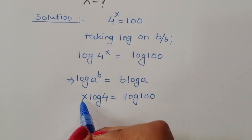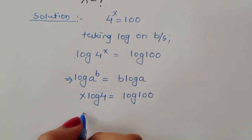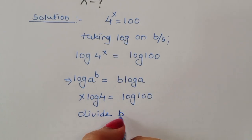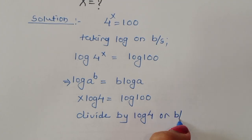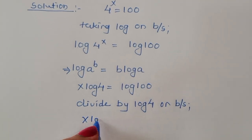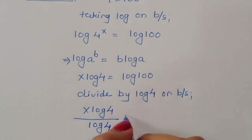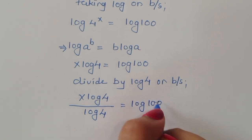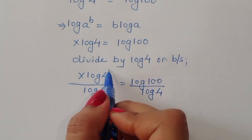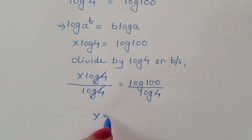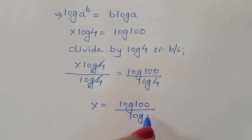Now we have to find the value of x, so we need to cancel log 4. We divide both sides by log 4. So x log of 4 divided by log of 4 is equal to log of 100 divided by log of 4. The log 4 terms cancel, giving us x is equal to log of 100 divided by log of 4.